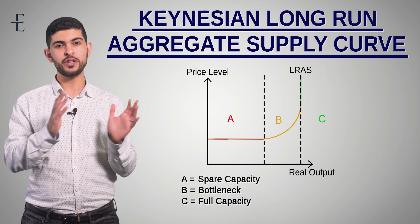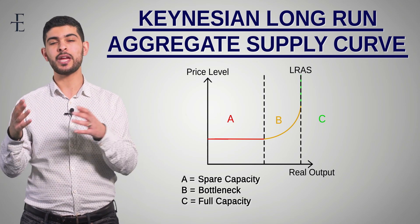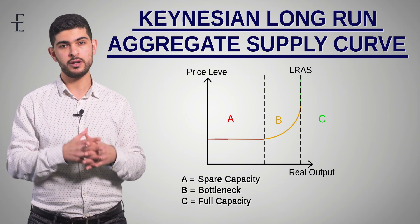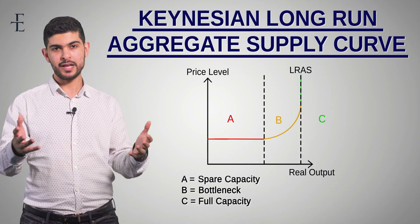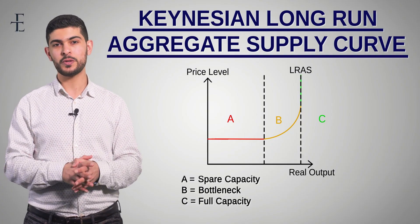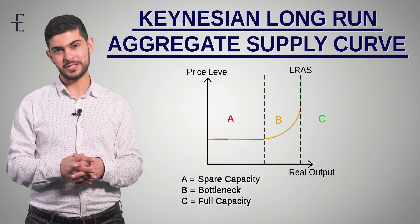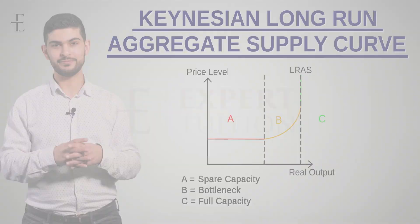That is the three sections of the Keynesian long-run aggregate supply curve. Check out some of our other videos, subscribe to our channel, and we'll hope to see you again soon.